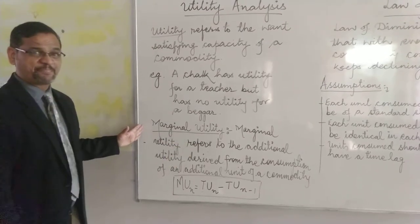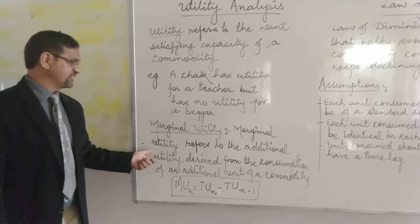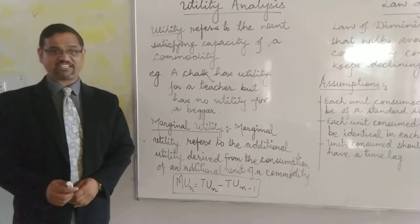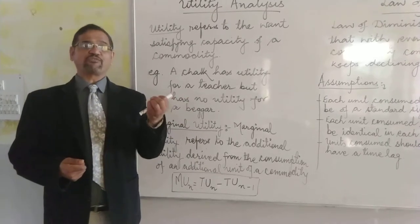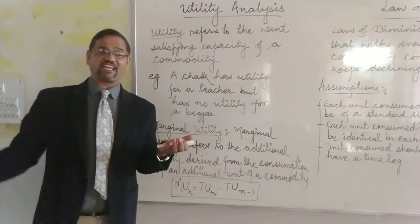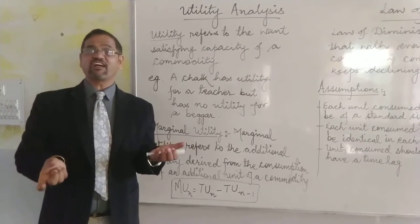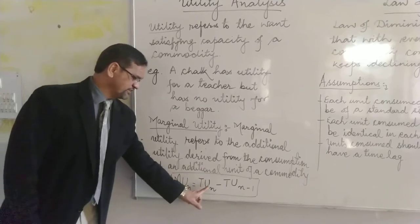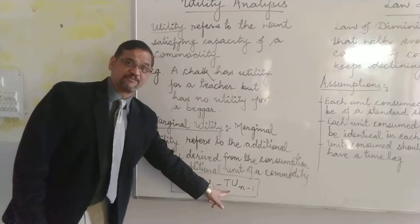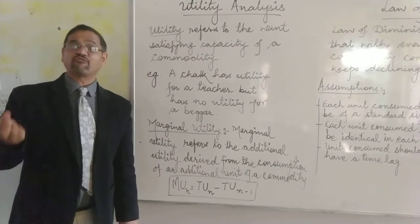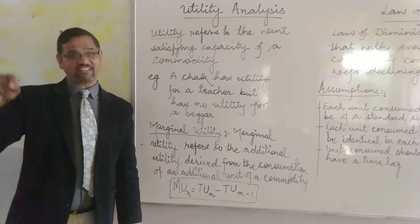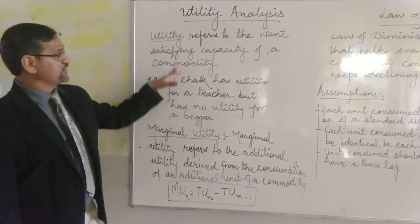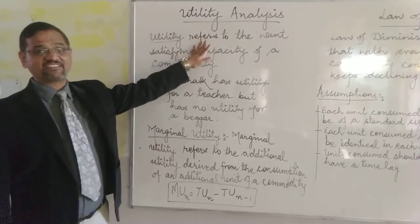Marginal itself means additional, so marginal utility refers to the additional utility derived from the consumption of an additional unit of a commodity. For example, if I'm eating five chapatis and getting 20 utils, and with six chapatis I get 28 utils, then from the sixth one I'm getting 8 extra utils. The marginal utility of the sixth unit equals total utility of six minus total utility of five — that is 28 minus 20, which equals 8 utils.